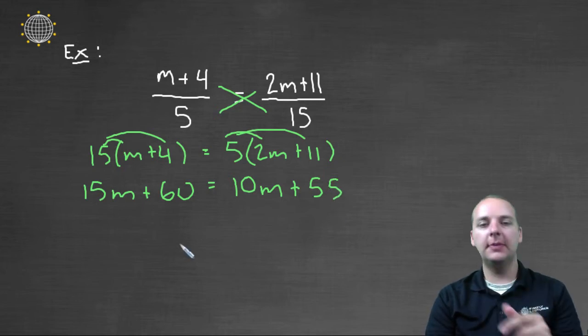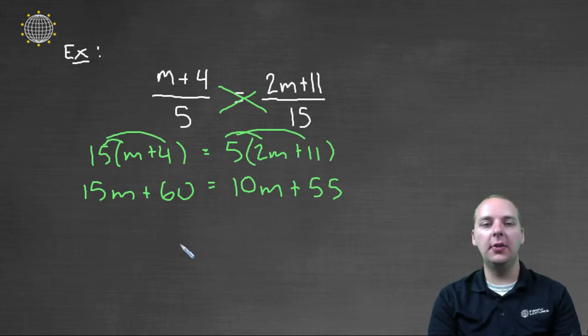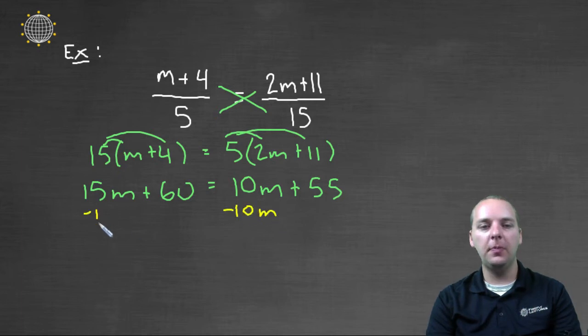We've simplified both sides, let's move the variables to one side and the constants to the other. So we will, let's say, subtract ten m from both sides. That will leave us with five m equals.